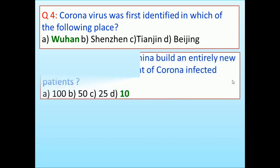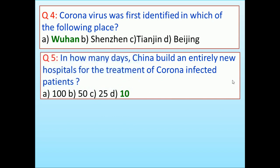In how many days did China build an entirely new hospital for the treatment of corona infected patients? 100, 50, 25, 10. Answer is 10.